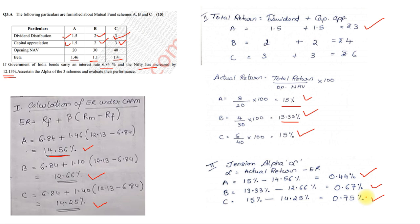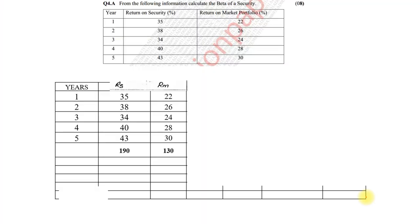So, now, let us check which was the next, this was the first question which was there, first practical question. The next practical question is, from the following information, calculate beta, they are giving you a return on security and market return. So, we have noted down, return on security and market return, total it up, it came to 190 and 130. In order to find beta, very first step that we will require is, the expected return.